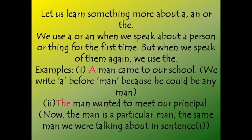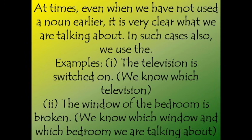If the same person is talked about for the second time, we use the instead of the indefinite articles a or an. There are also times when we have not used a noun earlier but it is very clear what we are talking about — in such cases also we use the. For example, 'the television is switched on' — we know which television we are talking about. Similarly, 'the window of the bedroom is broken' — we use the window and of the bedroom because we know which window and which bedroom we are referring to.